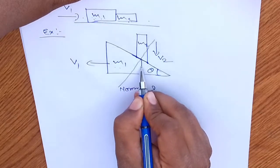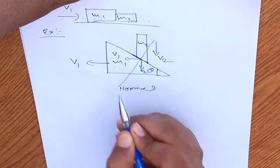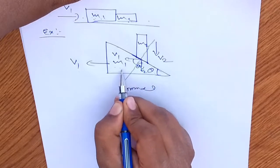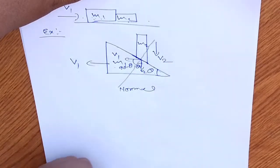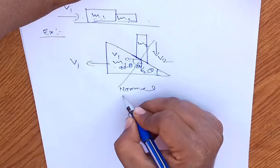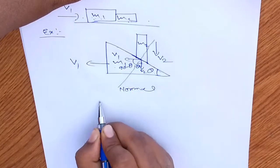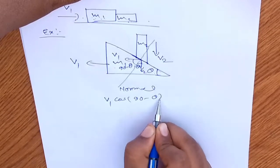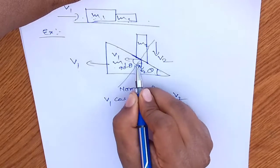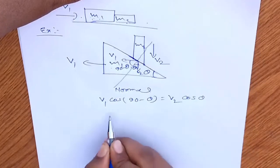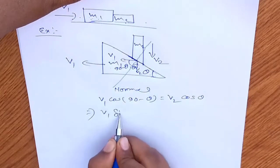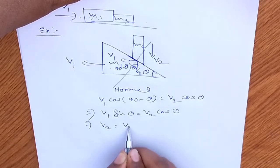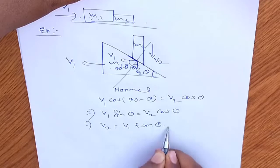That value will be the same for both blocks. Since this point is moving with velocity v2 and this one is coming with v1, if this angle is theta then this one is 90 minus theta. Take the component of velocity along the normal direction — the velocity of this block along this direction will have the same value: v1 cos(90 − θ) = v2 cos θ, giving us v1 sin θ = v2 cos θ, or v2 = v1 tan θ. This is the relation for any block system.